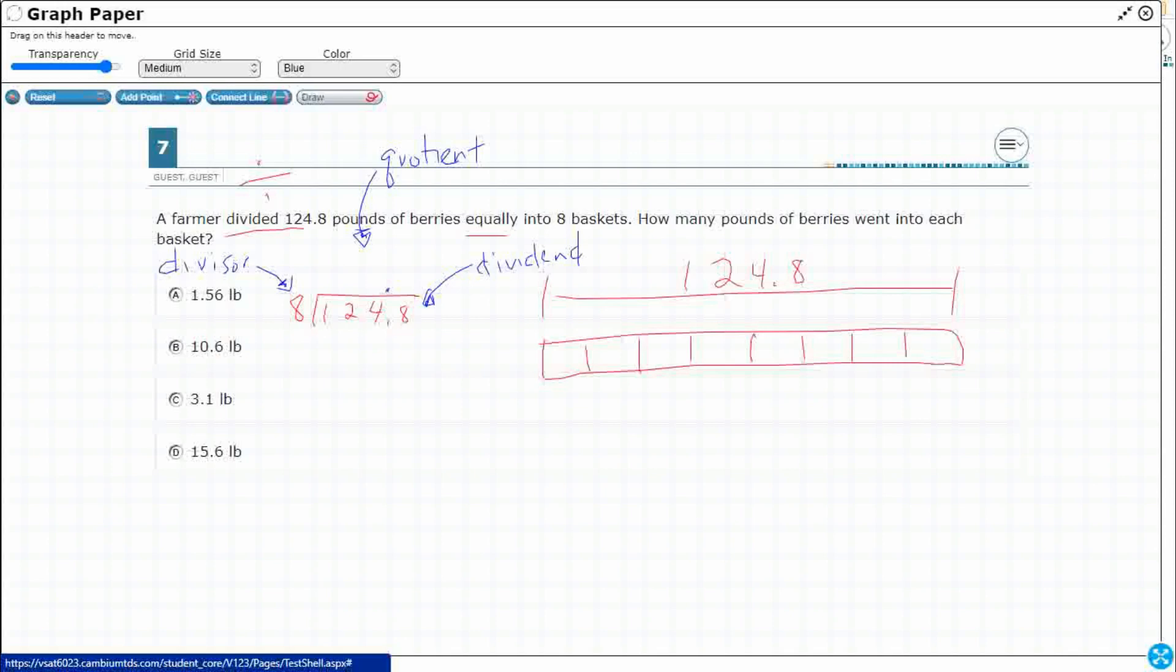8 goes into 12, it doesn't go into 1, goes into 12, 1 time. So we'll put the answer right up above. Use these little squares if you've got them to keep things nice and neat and ordered. 1 times 8 is going to be 8. Subtract. Always check to make sure, is your remainder less than your divisor? Yes, 4 is less than 8. If it's equal or greater, you messed up and you got to divide a little bit bigger. We only bring down one number at a time.